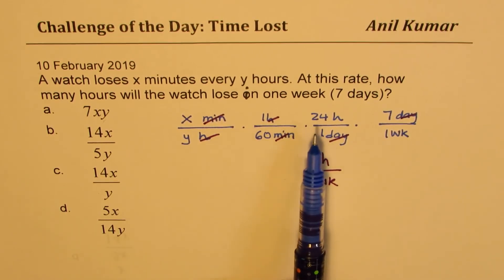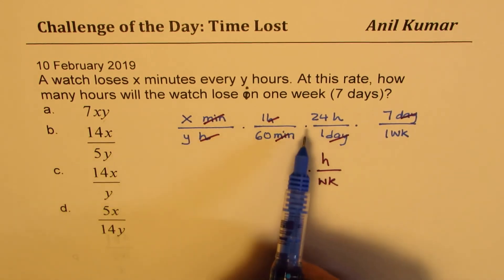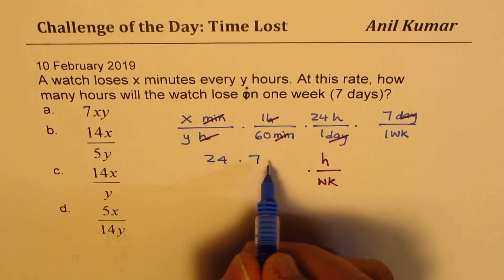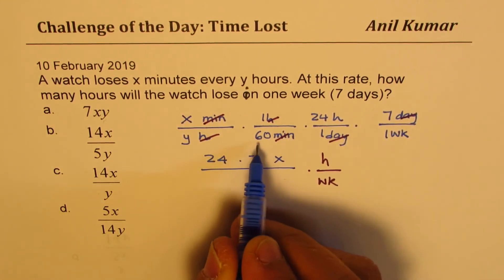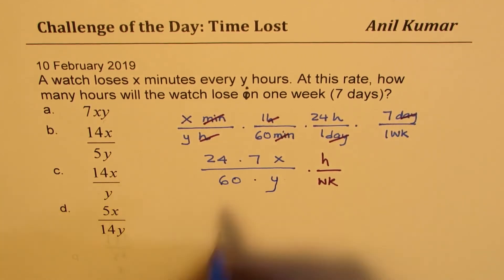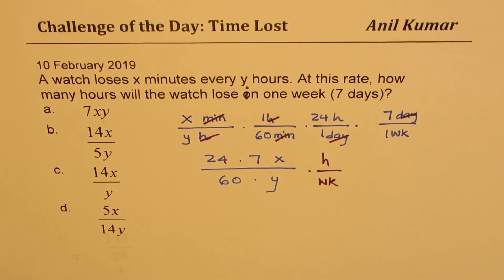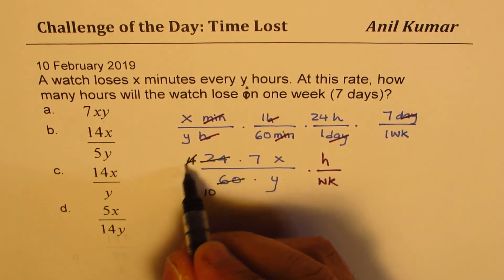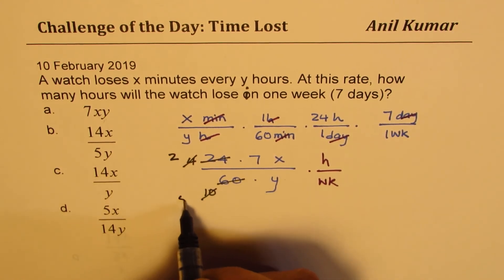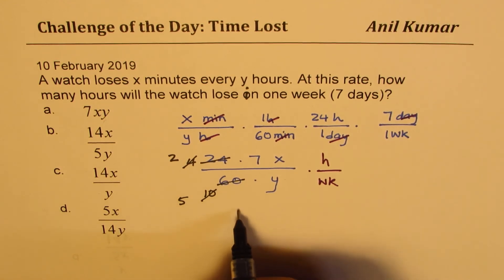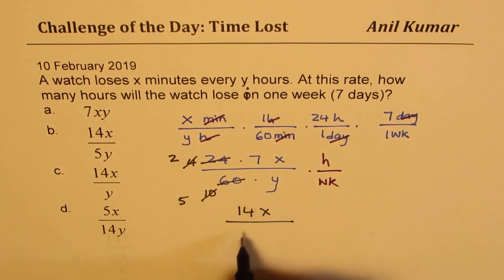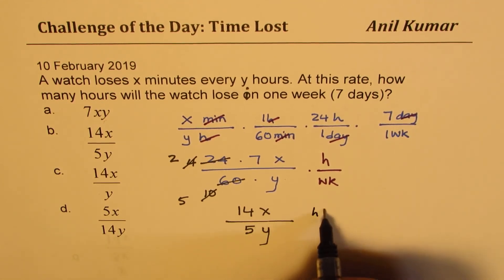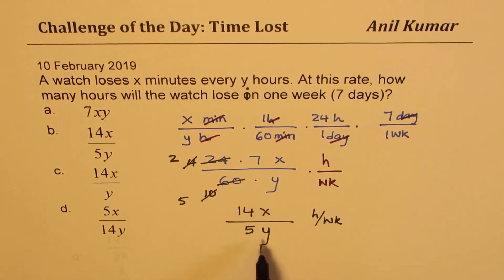And the expression is, in the numerator we are left with 24 times 7, let's rewrite, so we are left with 24 times 7 and also the variable x, and in the denominator we are left with 60 and y. Now these numbers can be simplified to get the correct answer. So we could divide both of them by 4, or let's do it by 6 first. If I divide by 6 we get 10, and 6 times 4 is 24, and then we could further simplify dividing them by 2, so we get 2 and 5. So that gives you the answer: 2 times 7 is 14x in the numerator, denominator we get 5y. So many hours per week. So 14x over 5y, which is our option B, is the correct option.